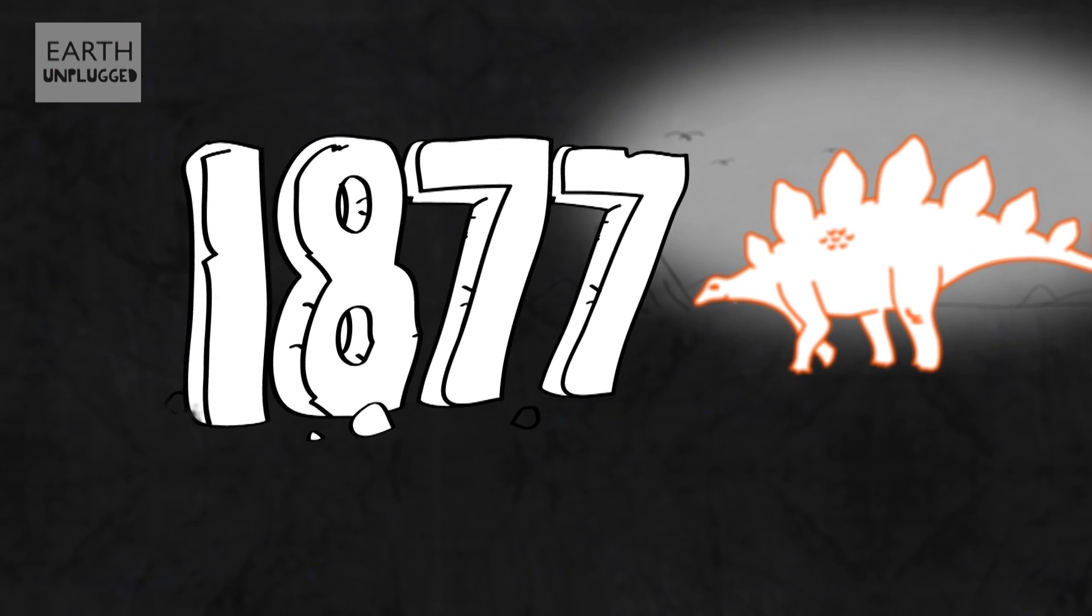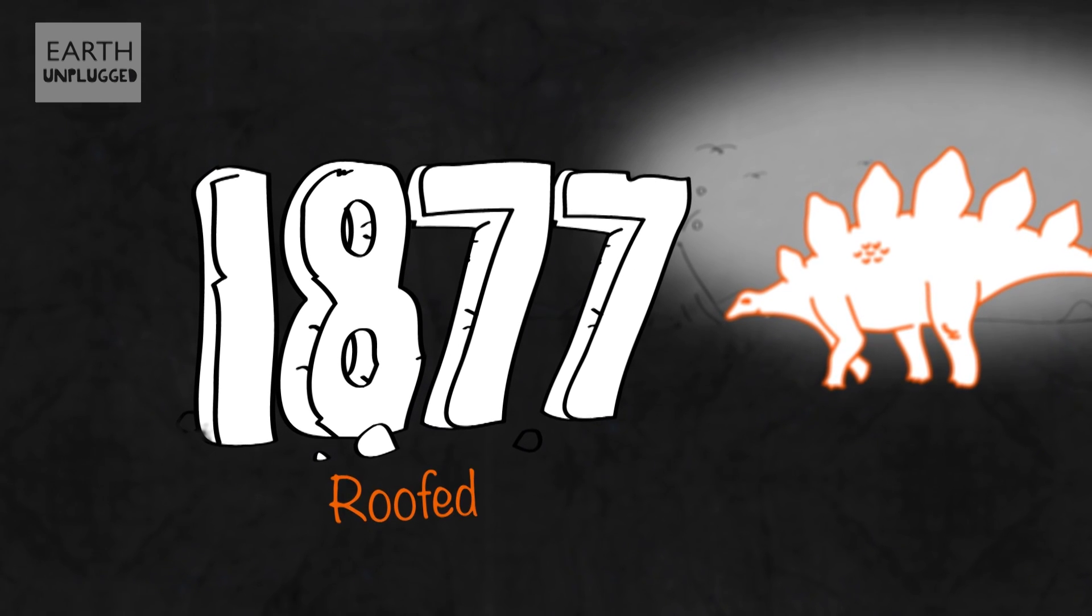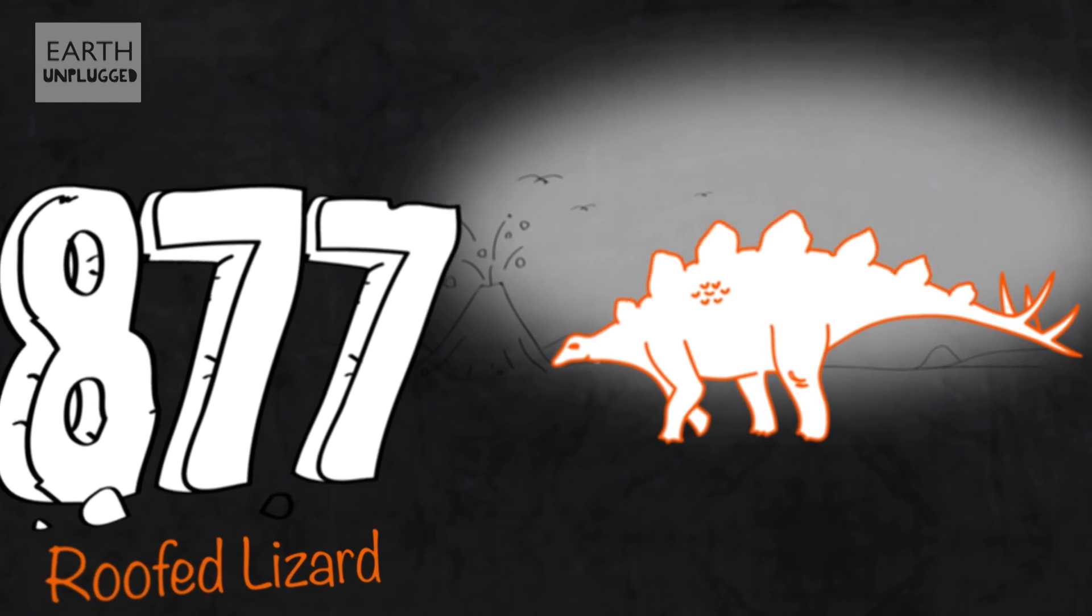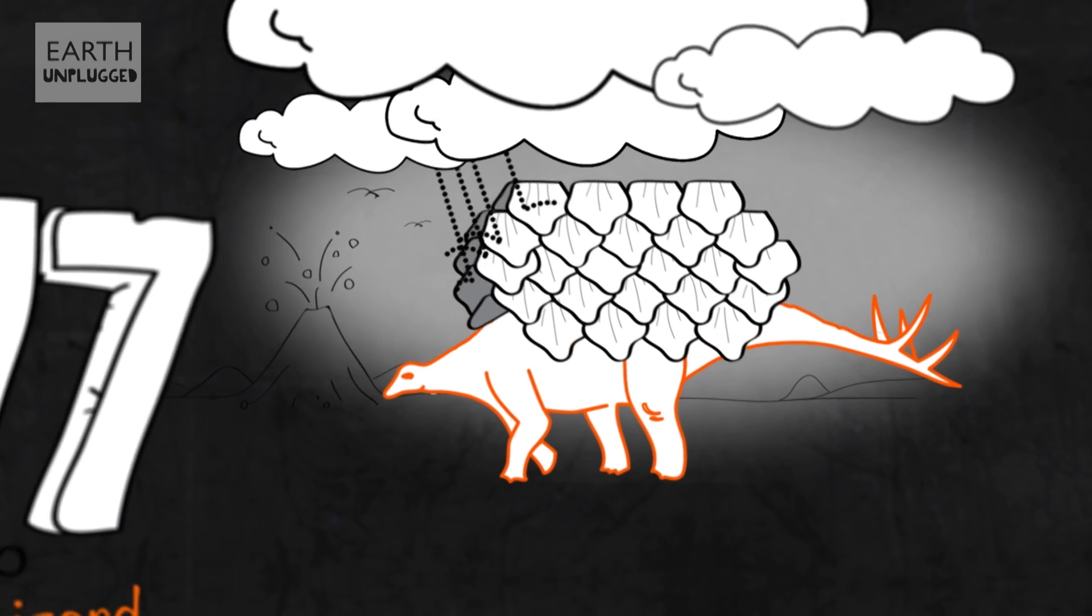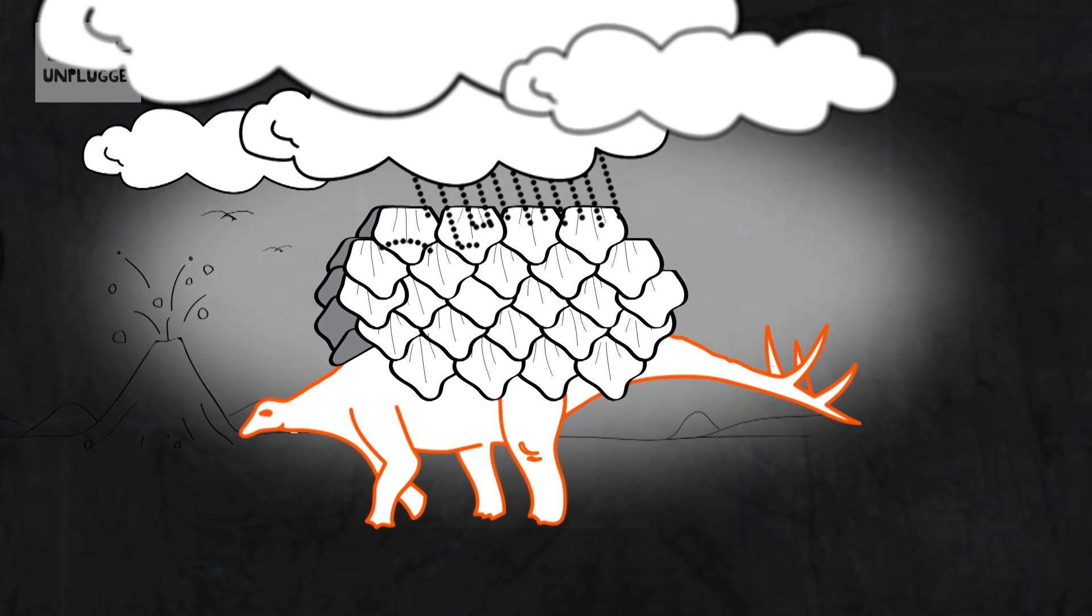Stegosaurus was first discovered in Colorado in the USA in 1877, and translates literally as roofed lizard, because originally the strange plates on its back were thought to have laid flat, forming a sort of roof over the animal, perhaps to shelter it from rain, a bit like a prehistoric umbrella.